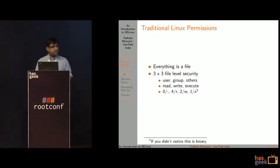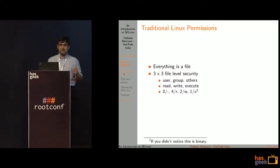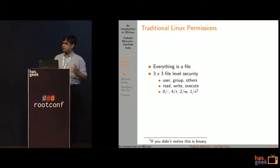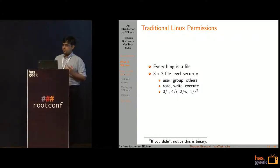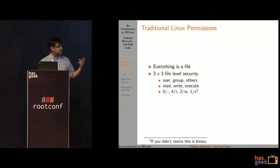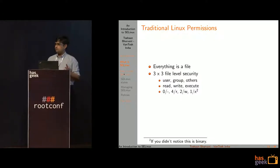So what is SELinux? First we need to understand what traditional Unix permissions are. In Unix, everything is a file, and a file can be secured by a three-by-three matrix — your user, your group, and others — and you can give them read, write, or execute permissions. That's how you get the binary statements you use with chmod 777, whereby everybody can do everything, which isn't the most secure approach but is the easiest example.